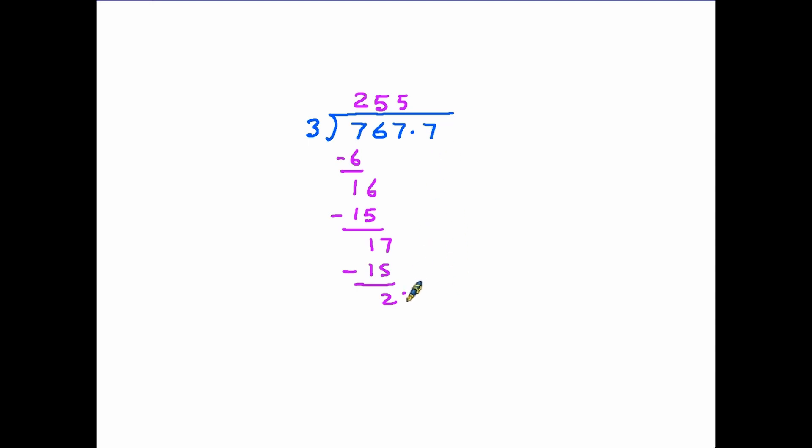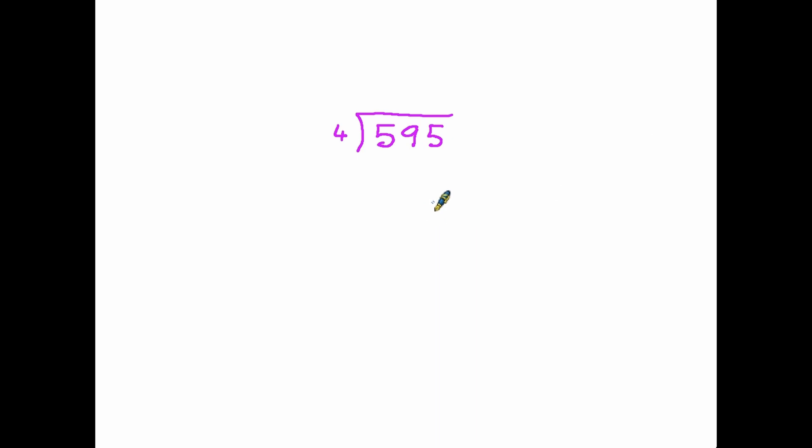The seven is the last number to come down. We are asked how many threes in 27. The answer is nine and of course nine threes are exactly 27. So when we take it away we are left with zero at the bottom. Nothing else to come down. Let's go back up to our question because of course this number had a decimal point. All we need to do in the answer is put the decimal point immediately above the one in the question. So our answer is 255.9 and this is going to be our last example.